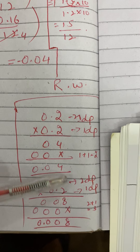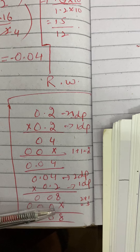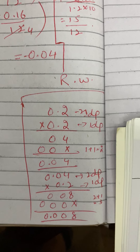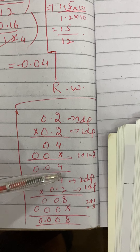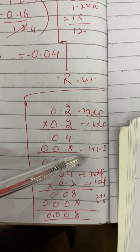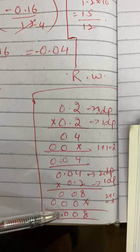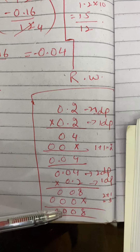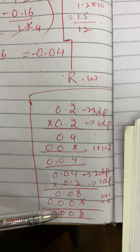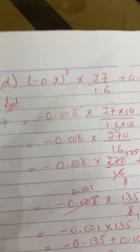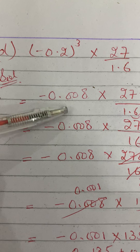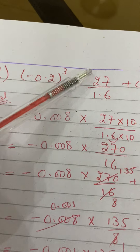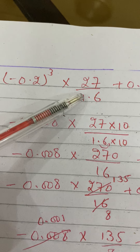Multiplying: 2 fours are 8, 2 zeros are 0, 2 zeros are 0. We count the decimal places: this is 2 DP and this is 1 DP, so 2 plus 1 is 3. We put the point after three digits — one, two, three — so the answer is 0.008.